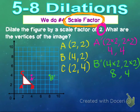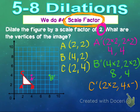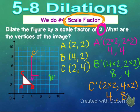For C prime, our original was (2, 4). Using our scale factor of 2, we multiply both coordinates by 2: 2 times 2 is 4, and 4 times 2 is 8. So C prime is at (4, 8) — we go over 4 and up 8. Now to see our dilated image, we just connect the points we've calculated. This is the image dilated with a scale factor of 2.